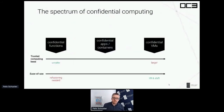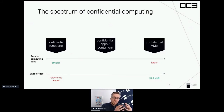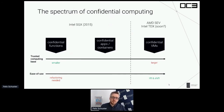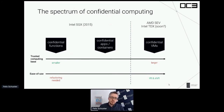The spectrum of confidential computing looks somewhat like this: on the left we have confidential functions, which have a small trusted computing base but are harder to program and need some refactoring. On the other end, confidential VMs are easier to use but have a larger attack surface. In the middle are confidential apps and containers. Confidential functions and apps are what people mostly do with Intel SGX and what most talks at OC3 will be about, while confidential VMs are mostly done with AMD SEV and Intel TDX.